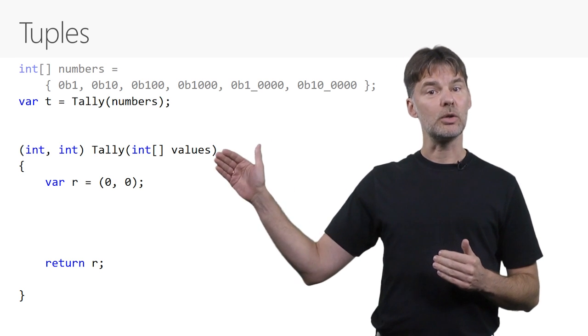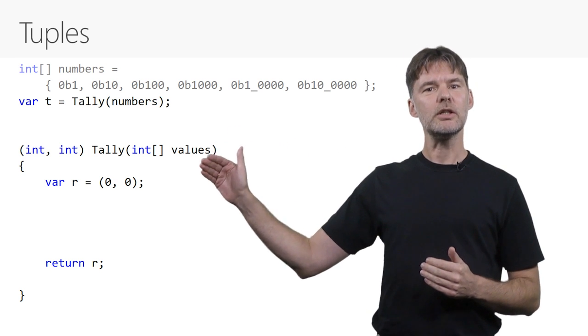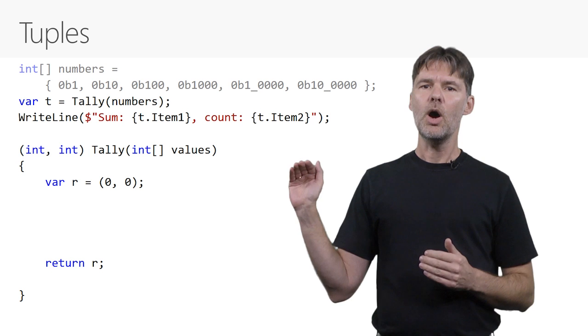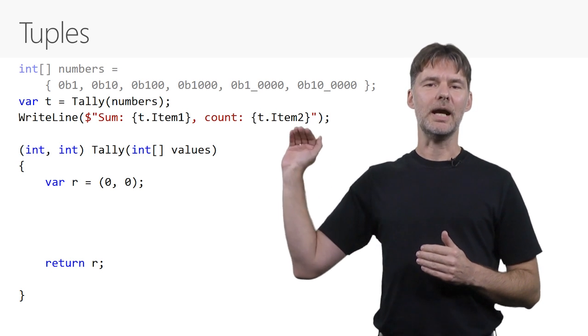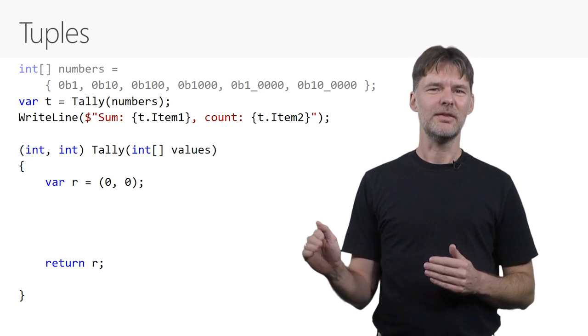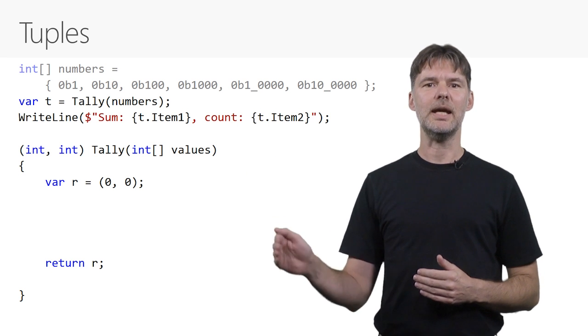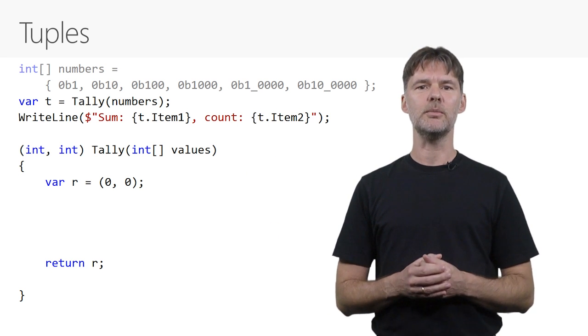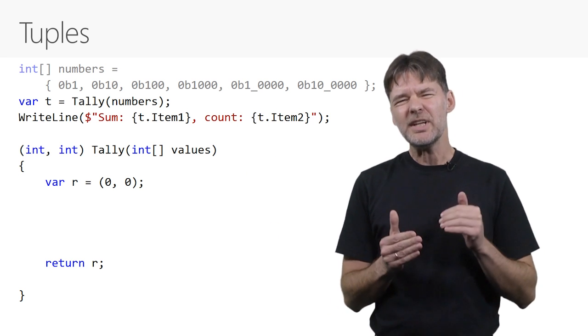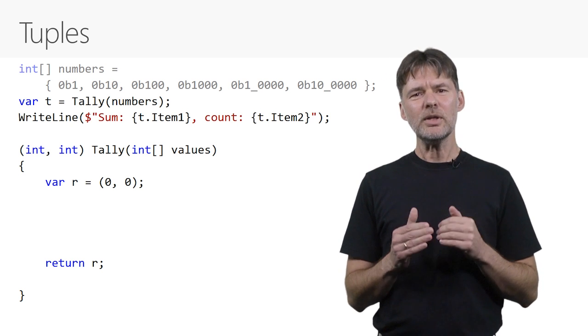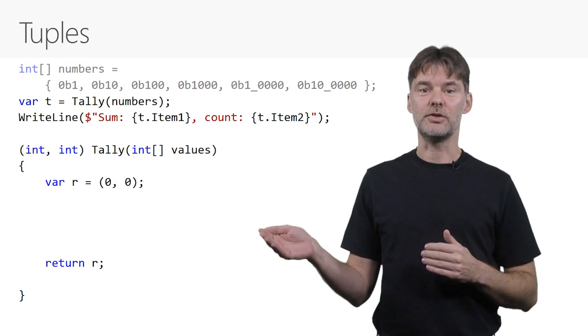For now, let's go back to the caller of tally and look at the different ways you can consume a tuple. All tuples have members named item1, item2, and so on that I can use here to get the sum and the count. You can always use these names to get at a tuple's elements, but they aren't very good names.